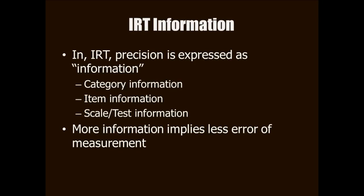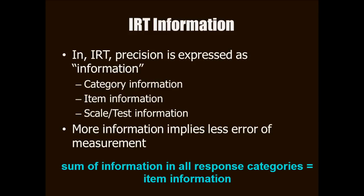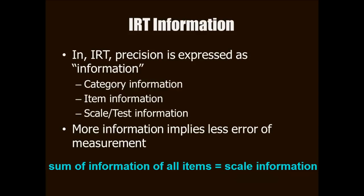Item response theory takes a really different approach to reliability than that taken in classical test theory. The analogous concept to reliability in IRT is called information. Information in IRT is cumulative. And what I mean by that is when information is calculated in IRT, every response category has some information. And if you sum across all the category information functions for a single item, then you get that item's information. If you sum across all the item information, you get the scale information. And of course, as the name implies, more information implies more reliability. More reliability means less error in measurement.